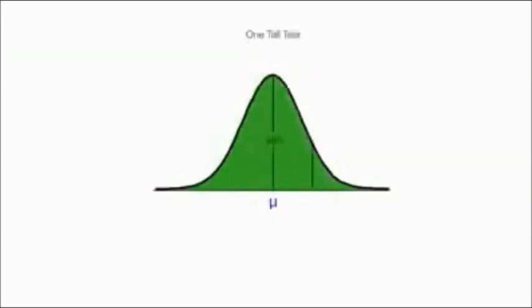I can also have a one-tail test with the red area to the right of the population mean. There's a 95% chance a randomly selected sample mean will be in the green area. There is a 5% chance it will appear in the red area, a randomly selected sample mean.